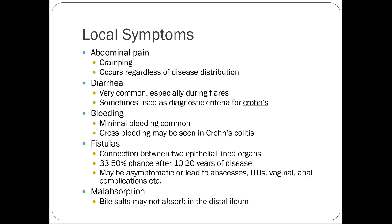Fistulas are connections between two epithelial-lined organs. Basically, two parts of the bowel get enough inflammation that it wears down the lining and creates a communication between them. After 10 to 20 years of Crohn's disease, there's up to a 50% chance a patient can develop a fistula. These can be asymptomatic — for example, two parts of the small intestine touching each other is likely not a big deal.